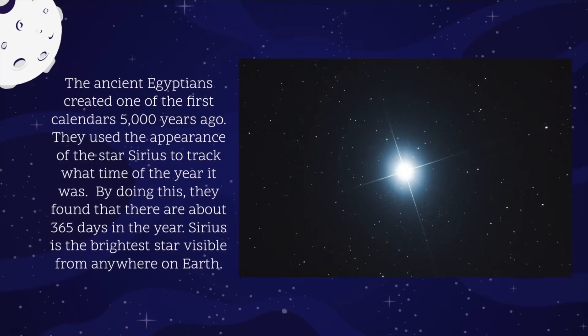The ancient Egyptians created one of the first calendars 5,000 years ago. They used the appearance of the star Sirius to track what time of the year it was. By doing this, they found that there are about 365 days in the year. Sirius is the brightest star visible from anywhere on Earth.